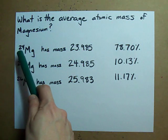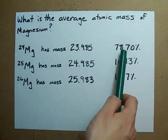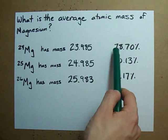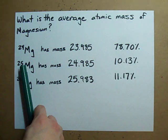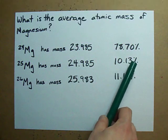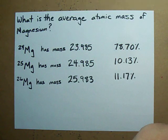Magnesium-24, which has this mass and is 78.7% of all magnesium found in nature. Magnesium-25, which has this mass and is 10.13% of all magnesium found in nature.